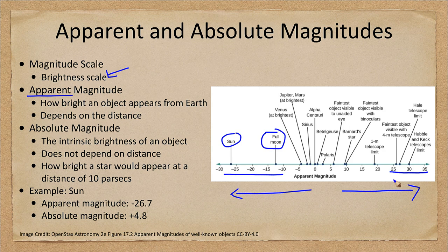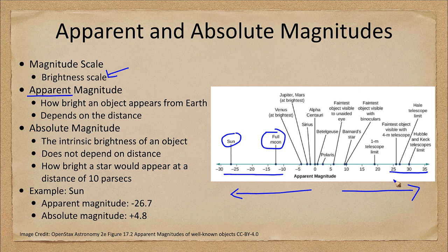The brightness for the apparent magnitude depends on the distance to the object — the further away an object is, the fainter it appears. So the apparent magnitude is a combination of how intrinsically bright a star is along with how far away it is, because a very bright object far away and a very faint object close to us might appear the same brightness.